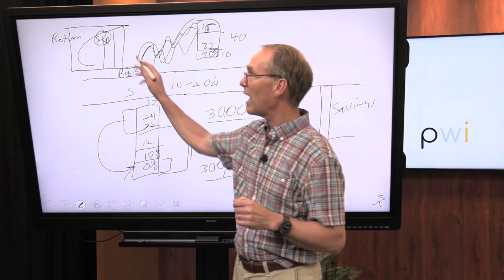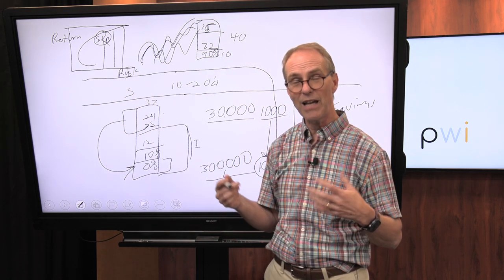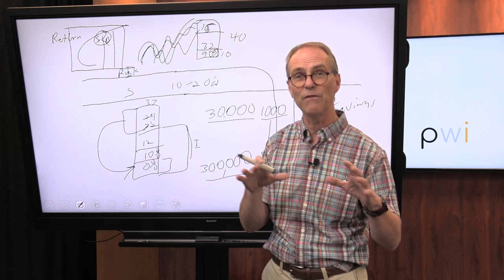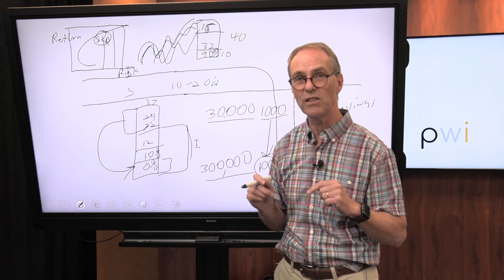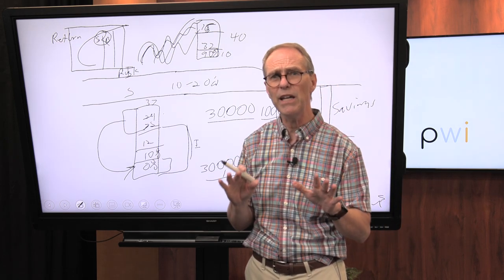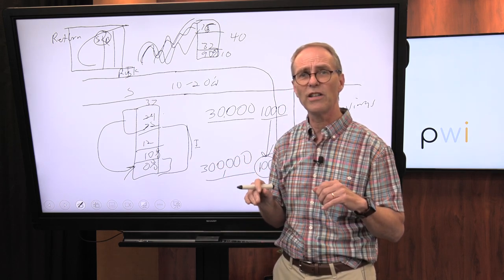Those are the types of things we look at when we determine how much in stocks versus bonds. Then when you get to retirement, you're going to be choosing an investment mix based on how much income you're going to take. So that's the first decision that you make.